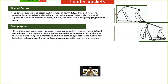The multipurpose bucket is also heavy-duty all-welded steel. Sometimes called 'four in one' because it can do four different operations: digging, blading, clawing, and grappling. The buckets have bolted-on replaceable cutting edges, and bolt-on type replaceable teeth can sometimes be attached. You can attach, detach, and replace them with new pieces.